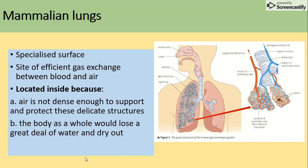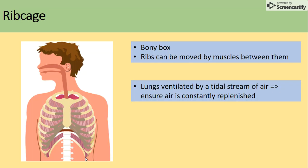The ribcage is a bony box and ribs can be moved by the muscles between them. The lungs are ventilated by a tidal stream of air, which means that we can make sure that air is constantly replaced.